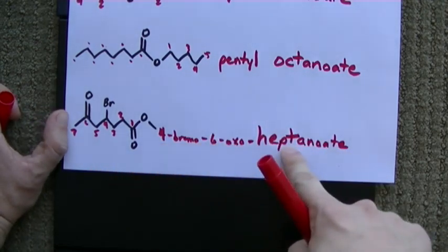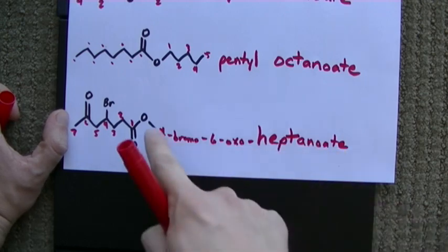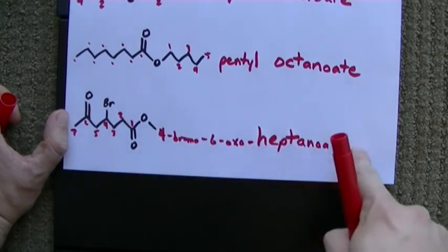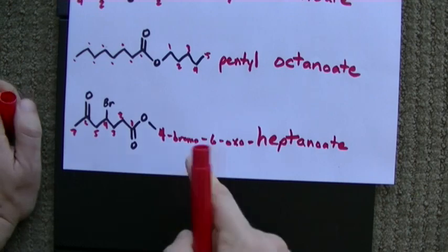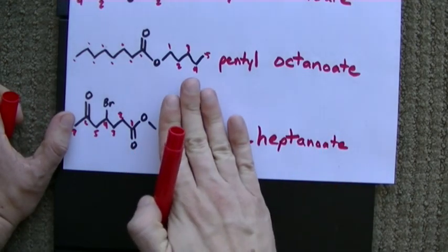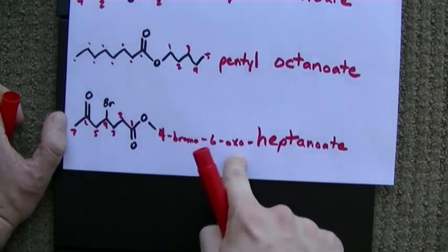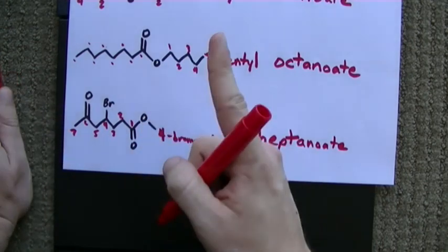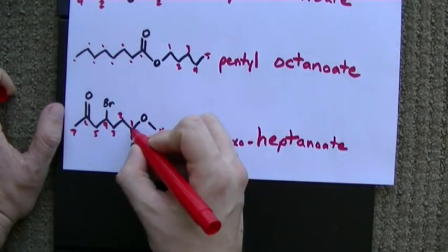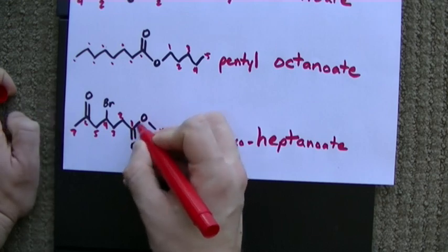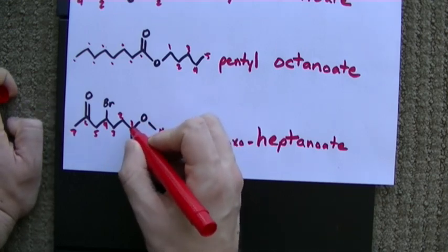And this just goes straight onto the front of the heptanoate. This is all one word. And it's what tells us we have our 7 carbon chain, with the ester linkage, a bromine on carbon 4, and an oxo on carbon 6. One thing to note is that the carbon with the double bonded oxygen in the ester linkage is always carbon 1.